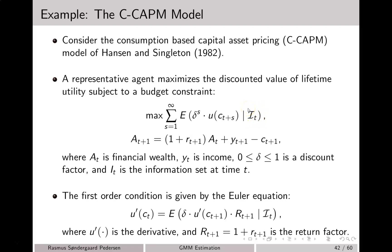The budget constraint is given by this equation, where at denotes financial wealth, yt denotes income, ct again is consumption, and rt plus 1 is the return on financial wealth.